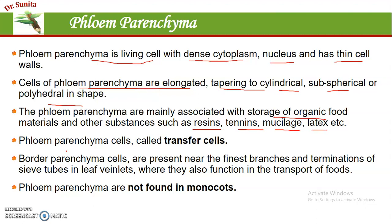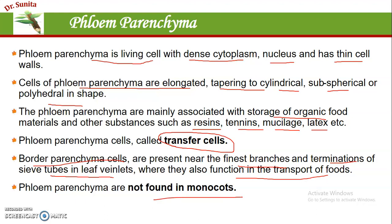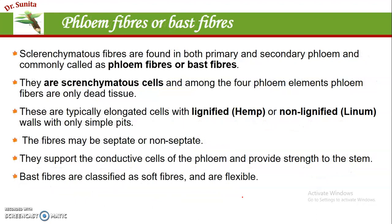Phloem parenchyma are sometimes also known as transfer cells because these help in the lateral conduction of food. The border parenchyma cells are present near the finest branches and terminations of phloem. Phloem parenchyma are absent in the monocots.